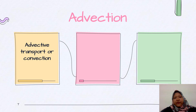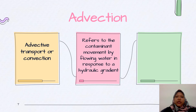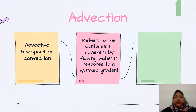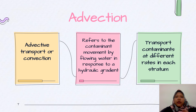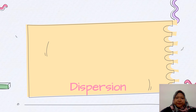Advection is also known as advective transport or convection. It refers to the contaminant movement by flowing water in response to a hydraulic gradient. Advection also transports contaminants at different rates in each stream.